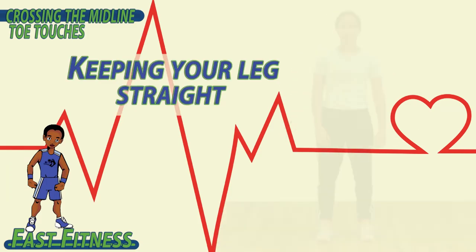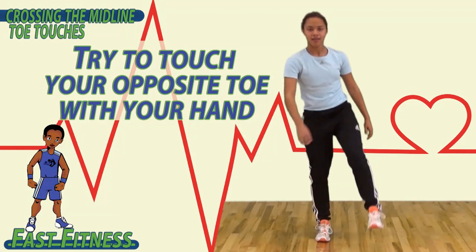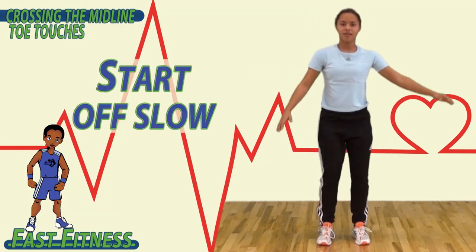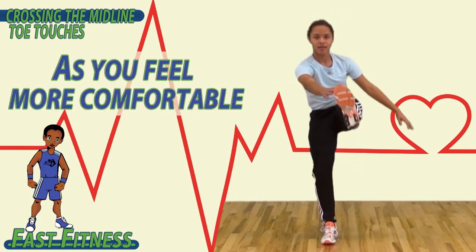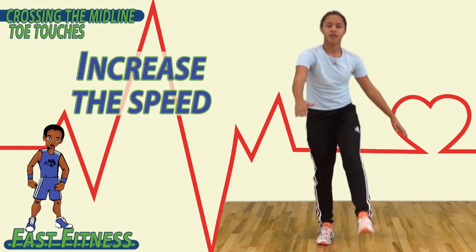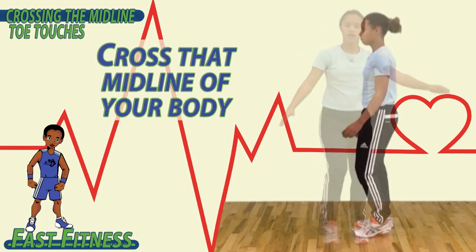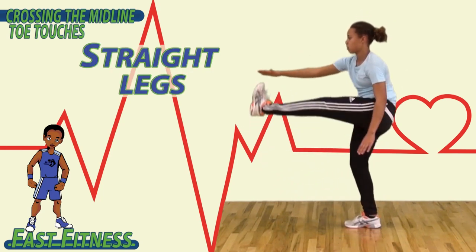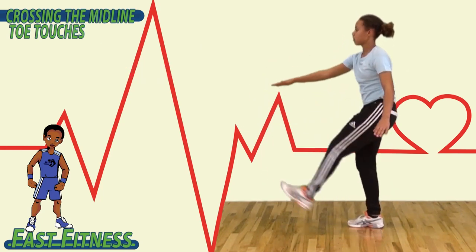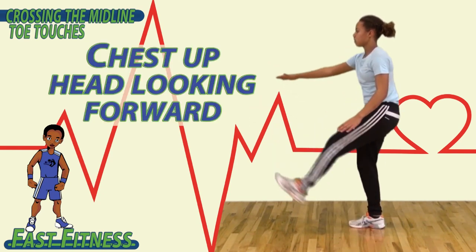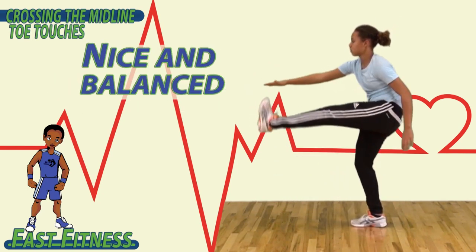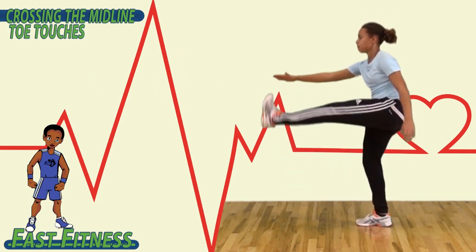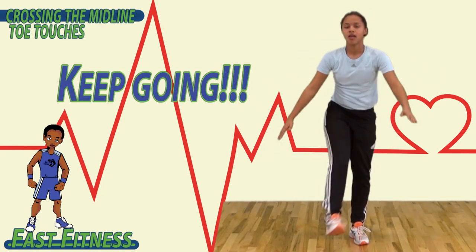To begin, keeping your legs straight, try to touch your opposite toe with your hand, and then switch. Start off slow, and as you feel more comfortable and balanced, go ahead and increase the speed. Cross that midline of your body, touching your hand to your toe. Remember to keep your legs as straight as you can. Chest up, head looking forward — nice and balanced. Keep going.